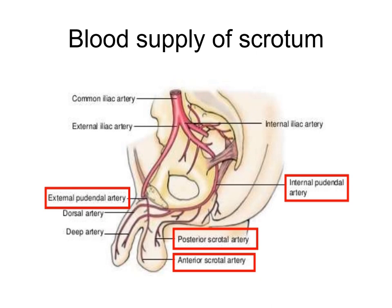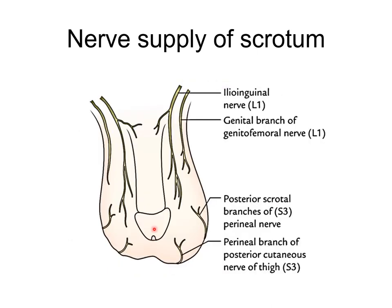The blood supply of the scrotum is from the superficial and deep external pudendal arteries, which are branches of the femoral artery; scrotal branches of the internal pudendal artery; and the cremasteric artery, a branch of the inferior epigastric artery. Veins accompany their respective arteries. The anterior one-third of the scrotum is supplied by the ilioinguinal nerve and the genital branch of the genitofemoral nerve. The posterior two-thirds is supplied by posterior scrotal branches of the perineal nerve and perineal branches of the posterior cutaneous nerve of the thigh. The involuntary dartos muscle is supplied by sympathetic fibers through the genital branch of the genitofemoral nerve.